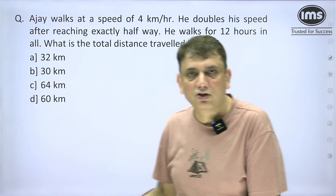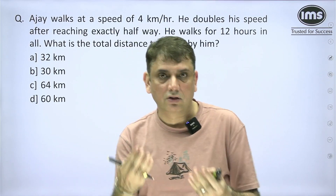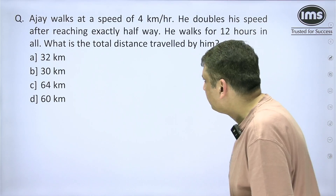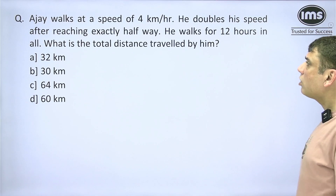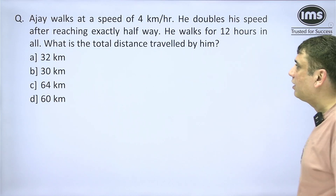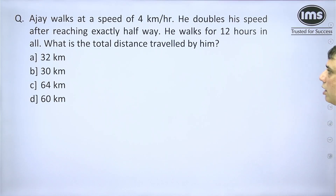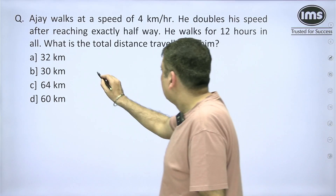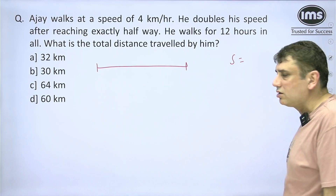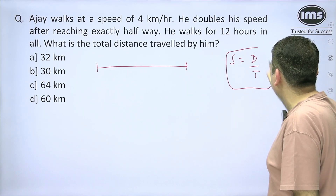Let's solve another one. There is a huge amount of learning in this next question — very consciously understand the concept of average speed. Again, pause the video and try to solve the question first. The question: Ajay walks at a speed of 4 km/h. He doubles his speed after reaching exactly halfway. He walks for 12 hours in all. What is the total distance traveled by him?